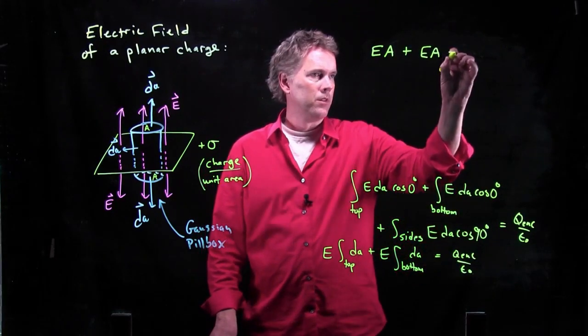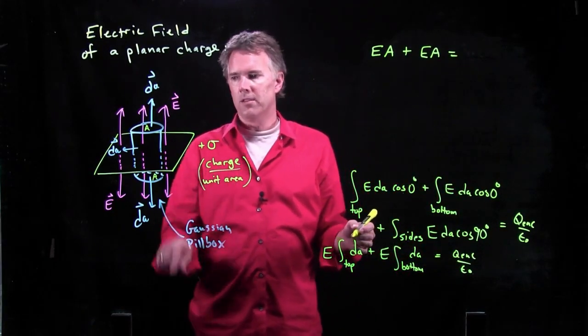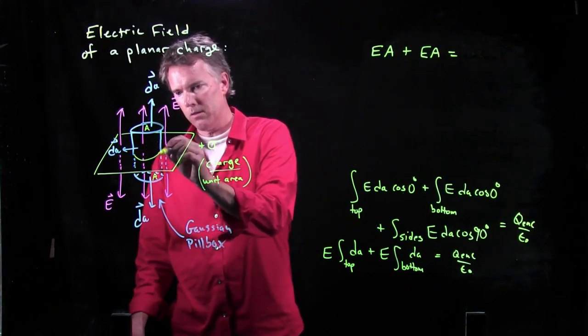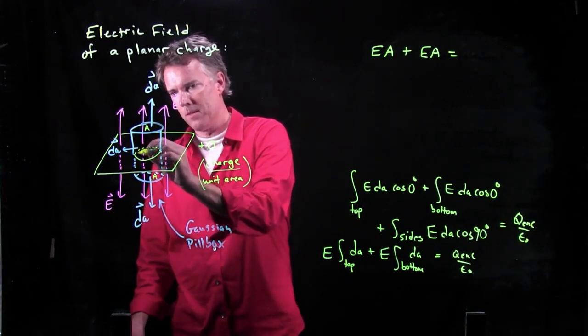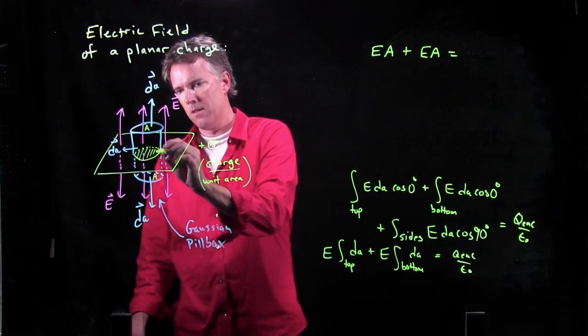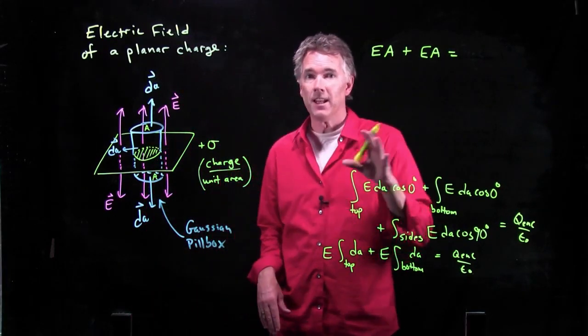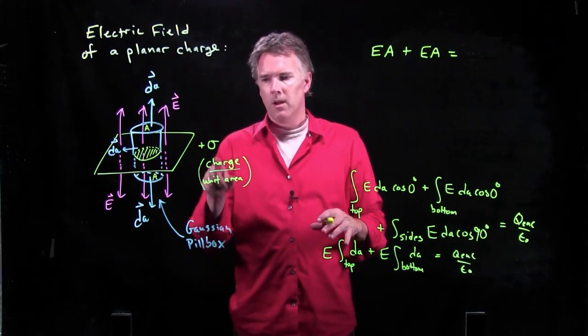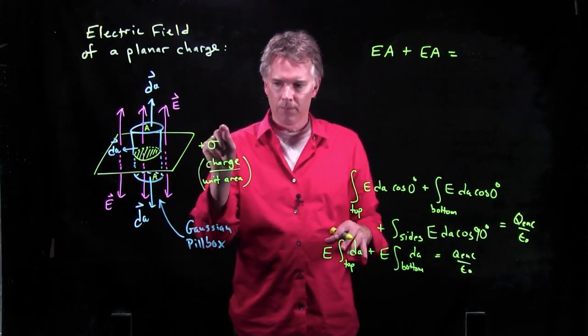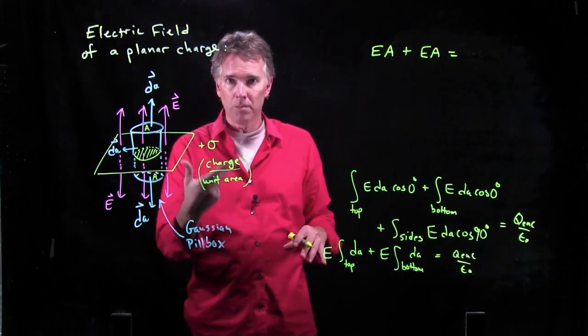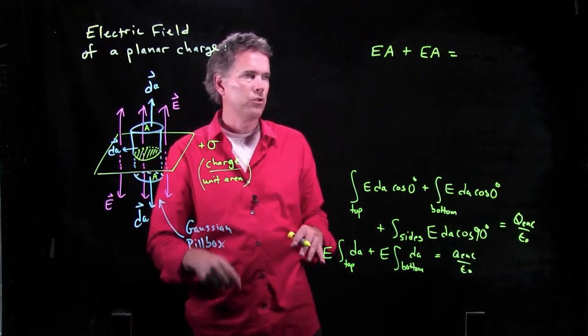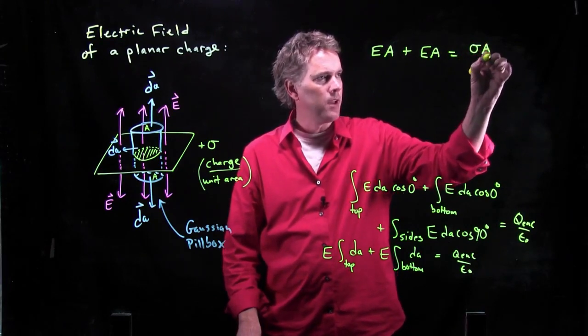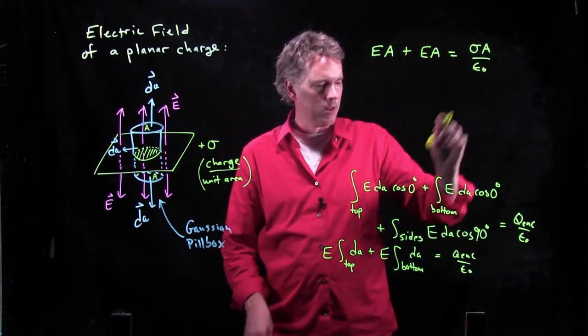Finally, what about Q enclosed? Q enclosed is how much charge is enclosed in this little region right here. How much charge is enclosed by our Gaussian surface? We told you what the charge density was, charge per unit area. So if I multiply by area, that is the total charge in there. So that just becomes sigma times A all over epsilon naught.